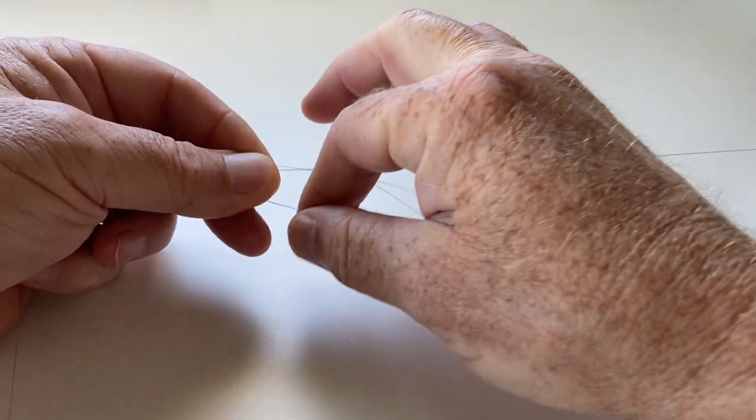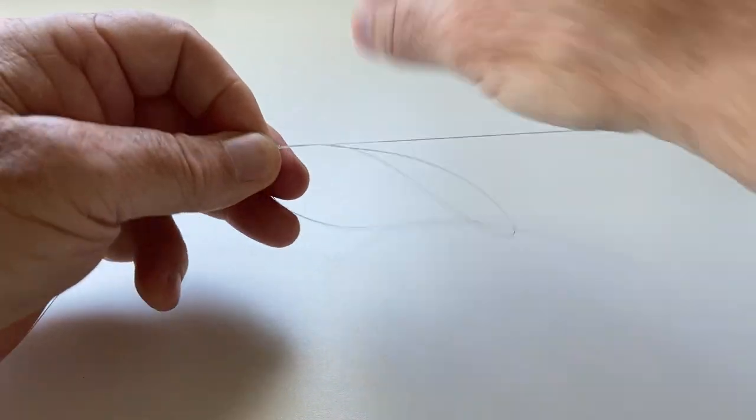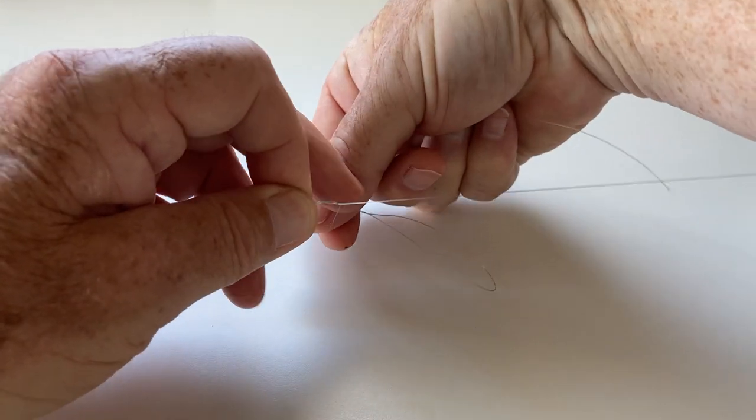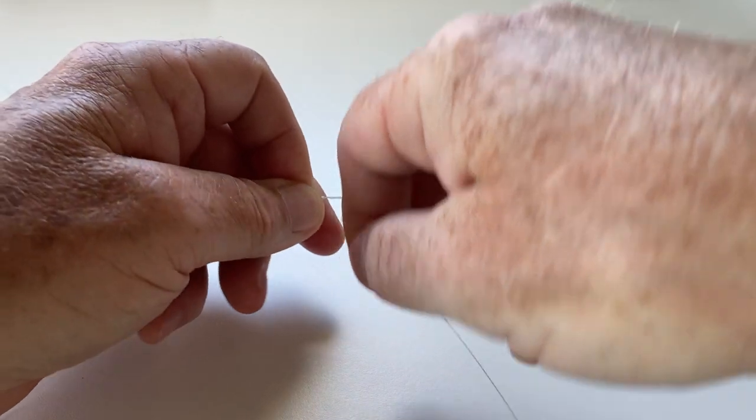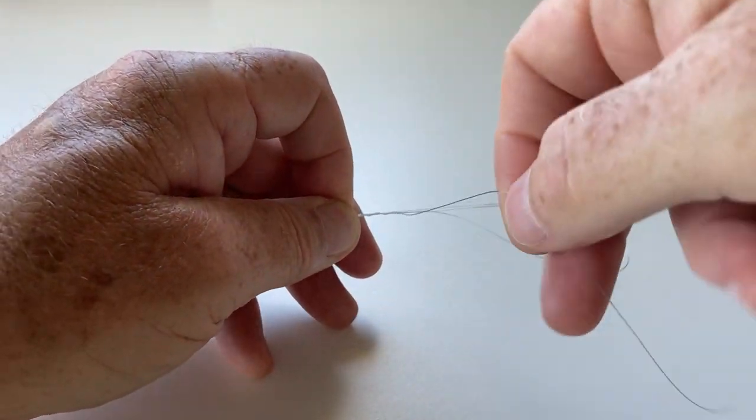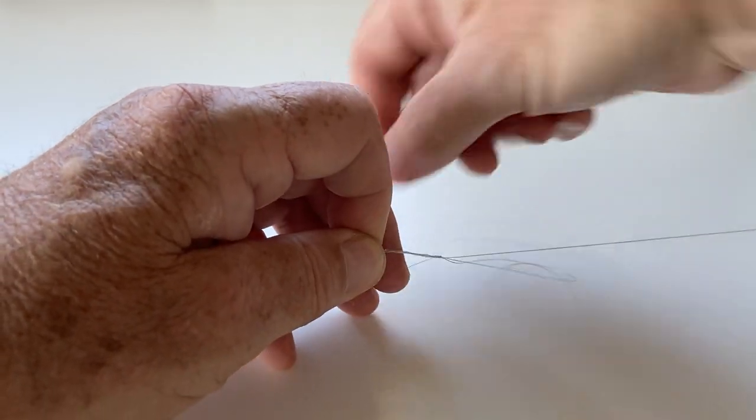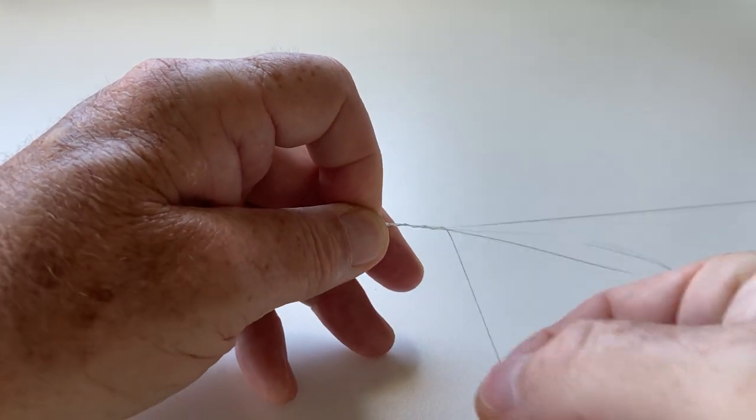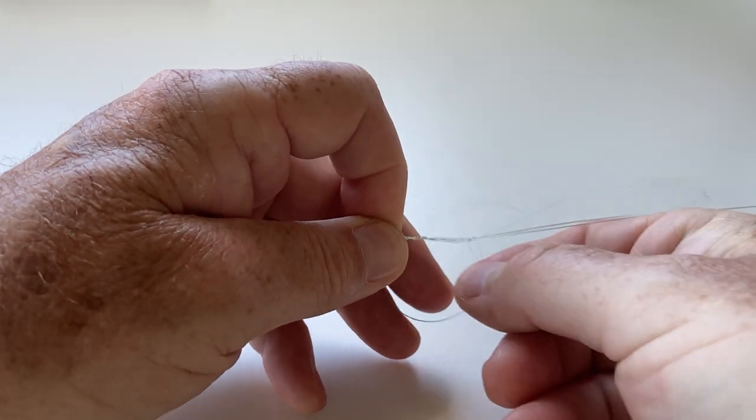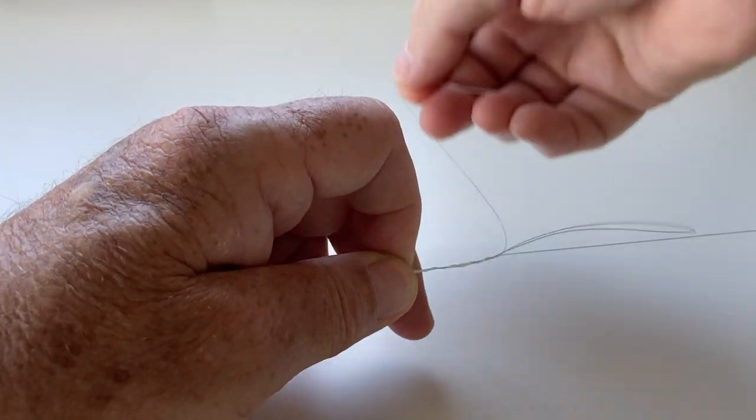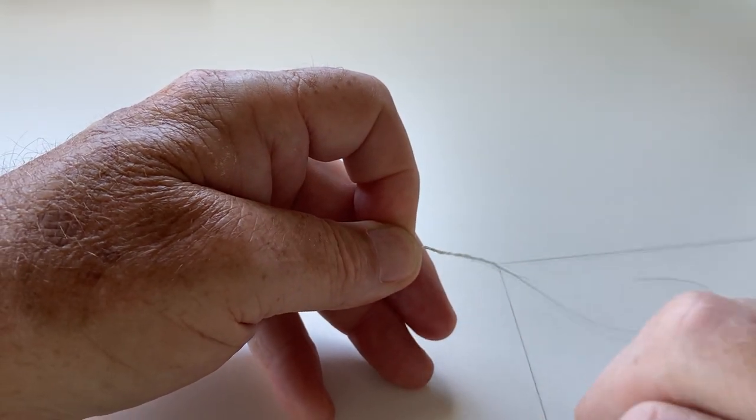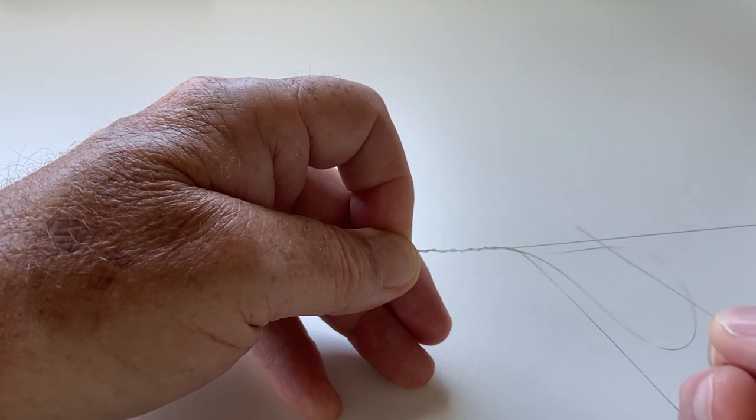Then take that same tag end and pass it round about six times around both the loop and the main line.